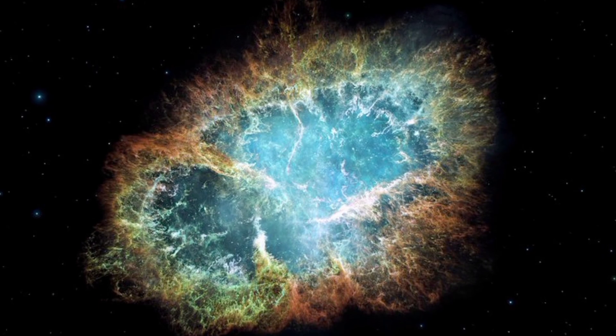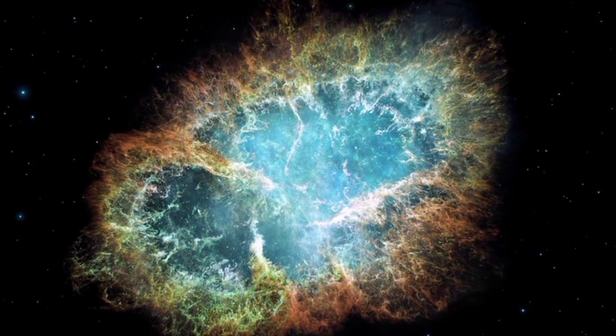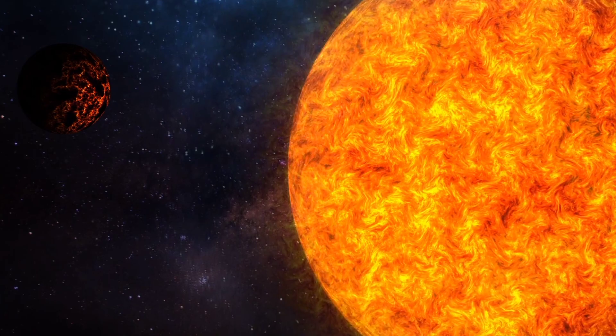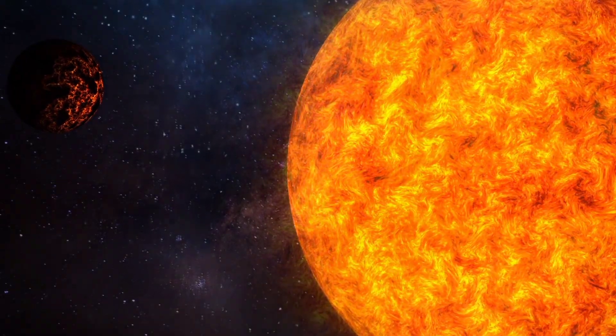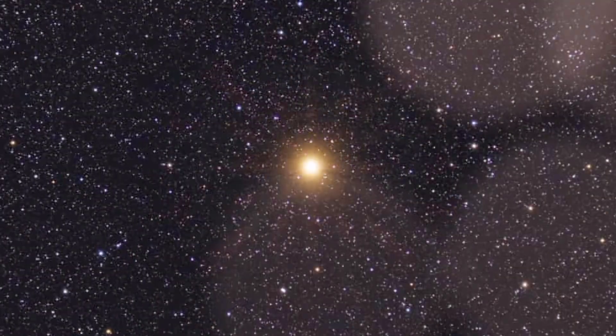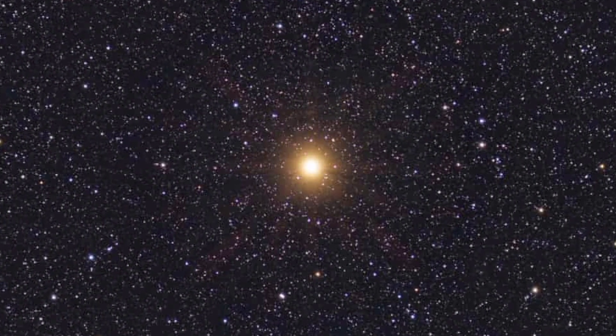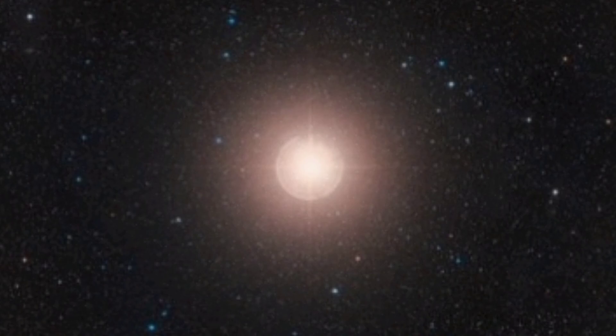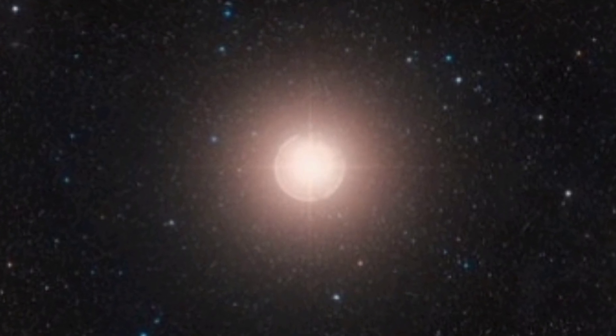When a star exhausts hydrogen and starts burning helium into carbon, it swells and can eventually collapse, leading to a supernova. Betelgeuse, a red supergiant, is believed to be in the last stages of its life, having already burned through its hydrogen core. While it's uncertain if we will witness its explosion in our lifetimes, it remains a fascinating subject for future generations.